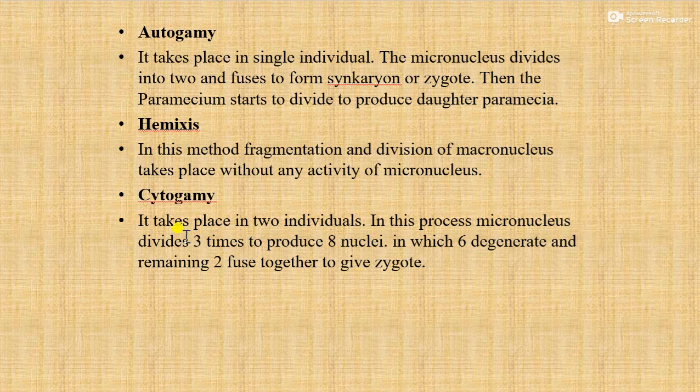Another one is cytogamy. It takes place in two individuals. In this process, micronucleus divides three times to produce eight nuclei, in which six degenerate and the remaining two fuse together to give a zygote. This is about sexual reproduction and nuclear reorganization.